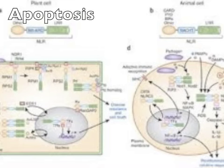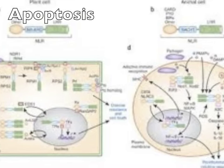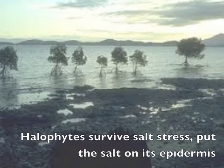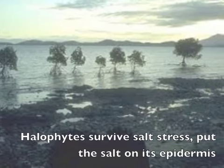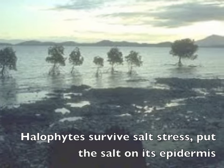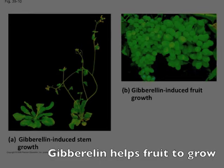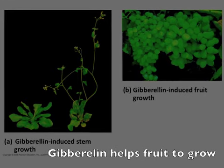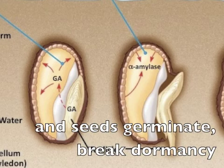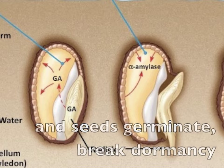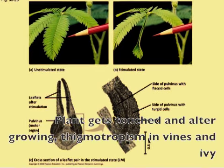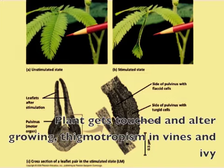The halophyte survives by putting salt on its epidermis. Gibberellins help food grow and seeds germinate — break dormancy. Plants get touched and grow — thigmotropism is seen in poison ivy.